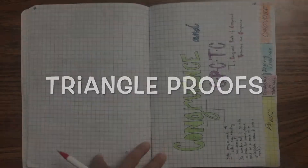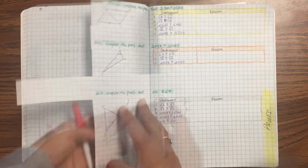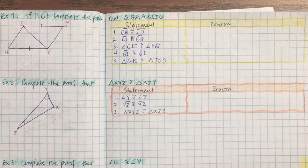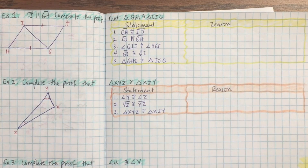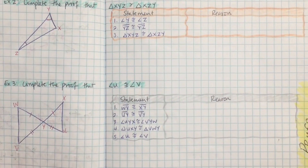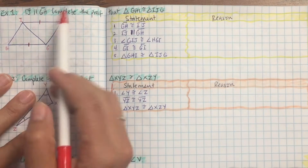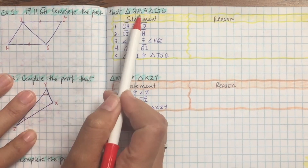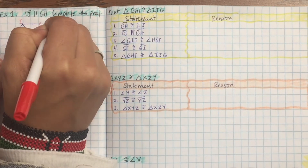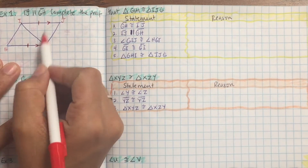Let's take a look at triangle proofs. You can pause the video and copy each example down. The problem says IJ is parallel to GH — complete the proof. I represent parallel lines by putting an arrow, so IJ is parallel to GH.